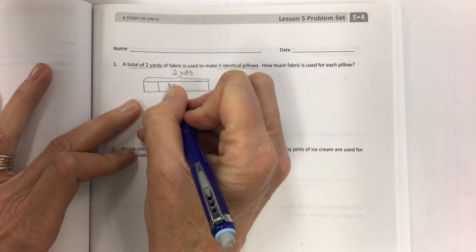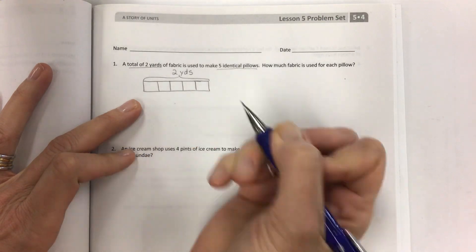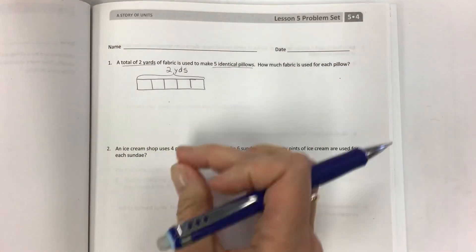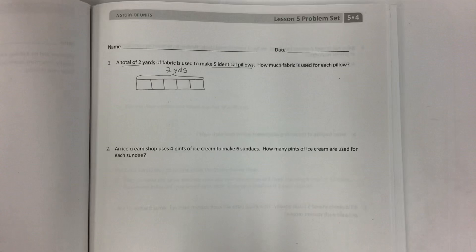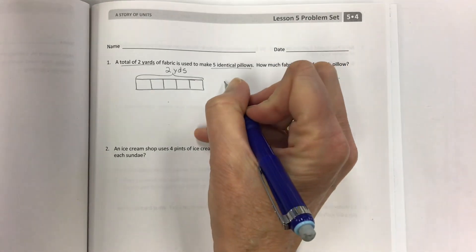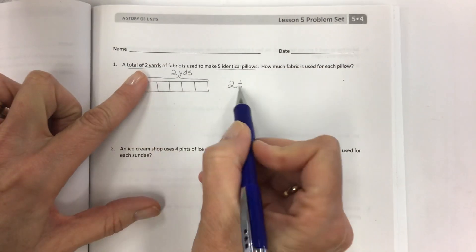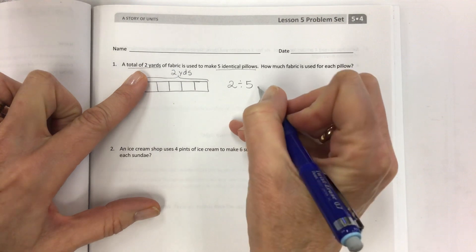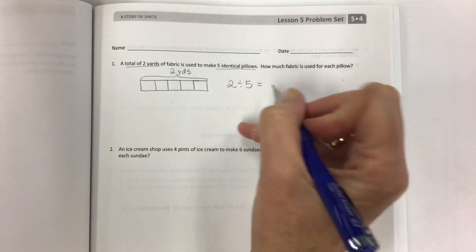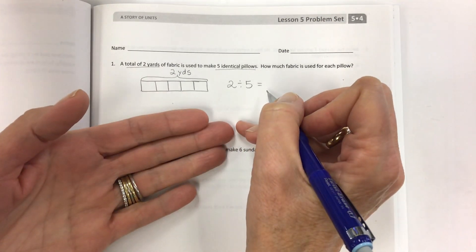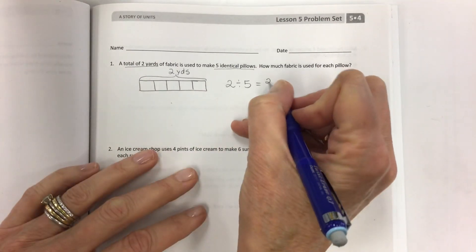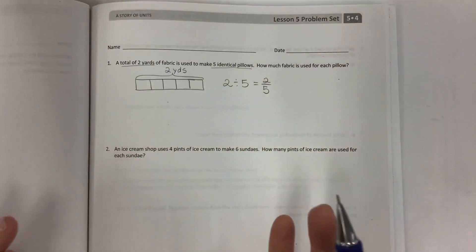Two yards is the whole. How many pillows? Five. So you can create a tape diagram of any number of parts. And so if I make an expression out of this, two yards is the whole that's being divided by five. If you apply the same strategies that we did in the previous lessons, it's just 2 divided by 5.